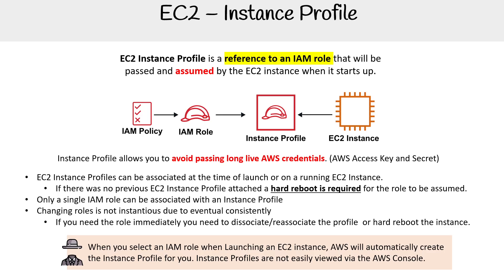When you select the IAM role when launching an EC2 instance, AWS will automatically create an instance profile for you, so you don't really notice this in the console. But when you use the AWS CLI, you are explicitly creating an instance profile. You can't see instance profiles anywhere in the management console — the only way you can see a list of them is via the API, which is why we're looking at the CLI commands here.